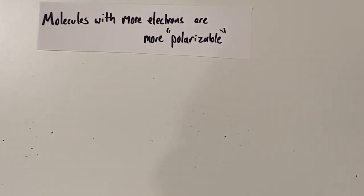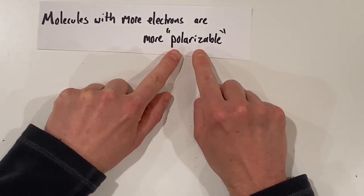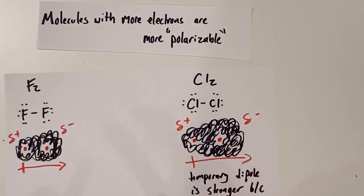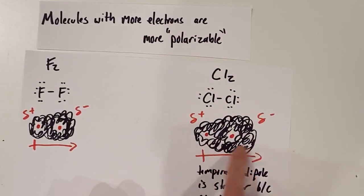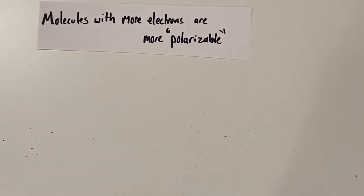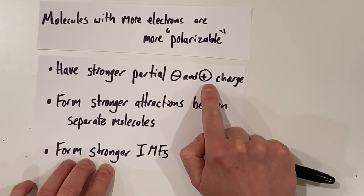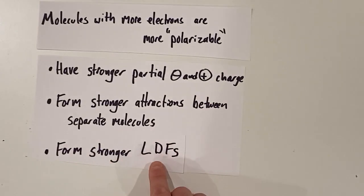Molecules with more electrons are more polarizable. Polarizable means how polar we're able to make a nonpolar molecule — how much the electrons are able to zoom out. If we have more electrons, more of them are able to go on one side of the molecule than the other, so it's more polarizable and it's able to become more polar. Molecules with more electrons are more polarizable, and therefore they're going to have stronger partial negative and partial positive charges. They're going to form stronger attractions between separate molecules and form stronger IMFs — in this case, London dispersion forces.